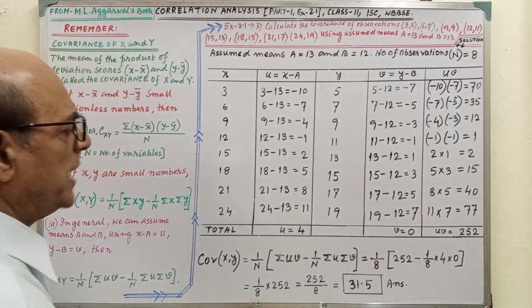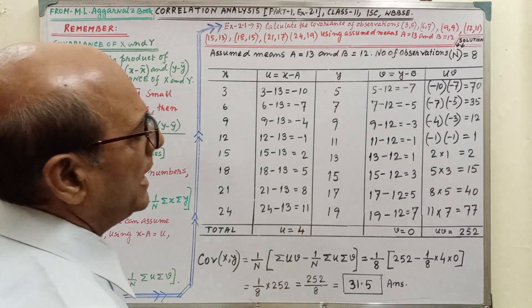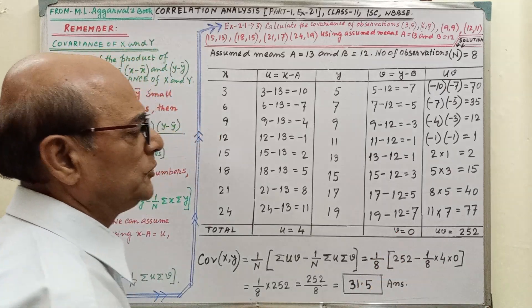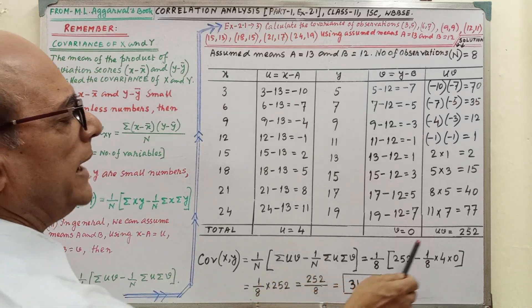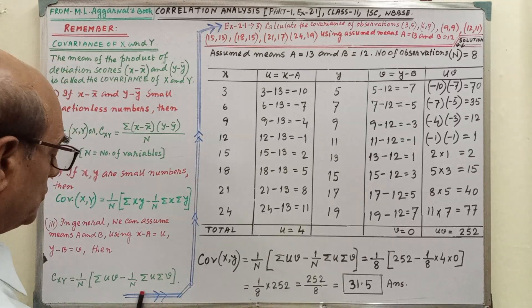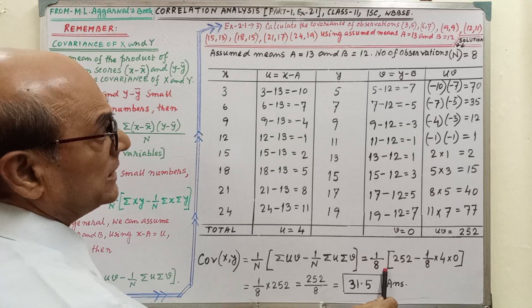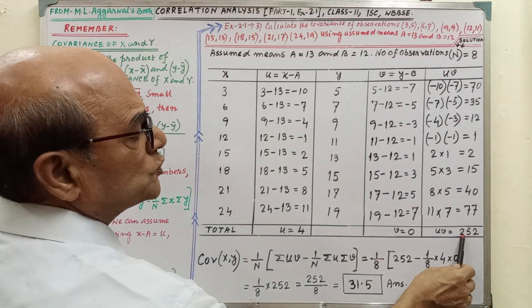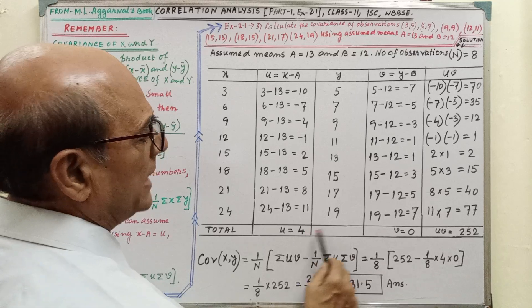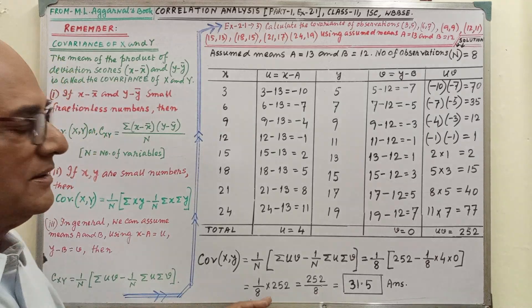After writing this, we have to add the totals. The sum of u is 4, the sum of v is 0, and the sum of uv is 252. We write the frame of the covariance equation and put in the relevant values: capital N is 8, so 1 by 8 into 252, minus 1 by 8 into 4 into 0. By calculation, the covariance comes to 31.5.